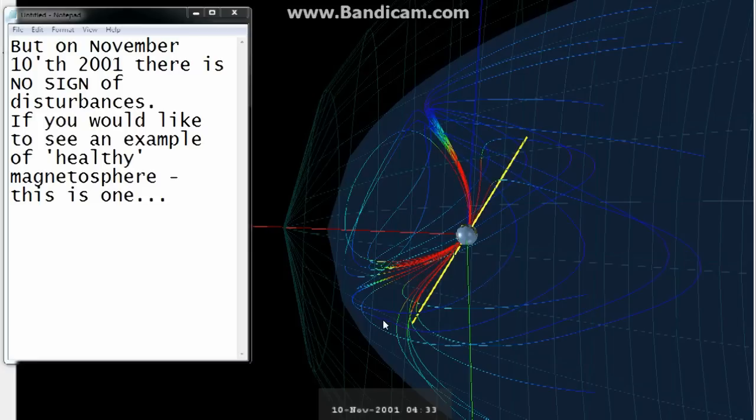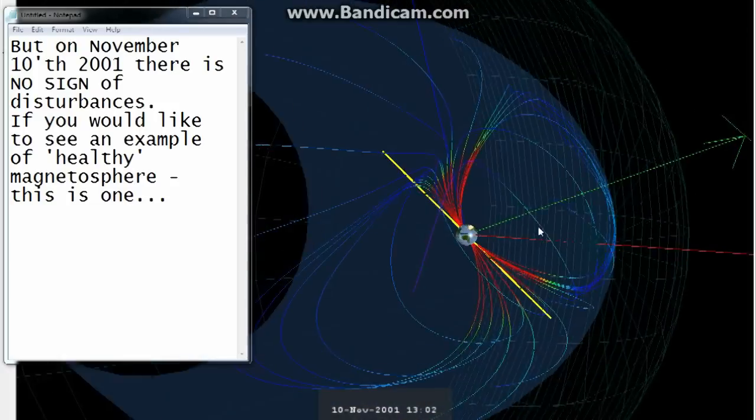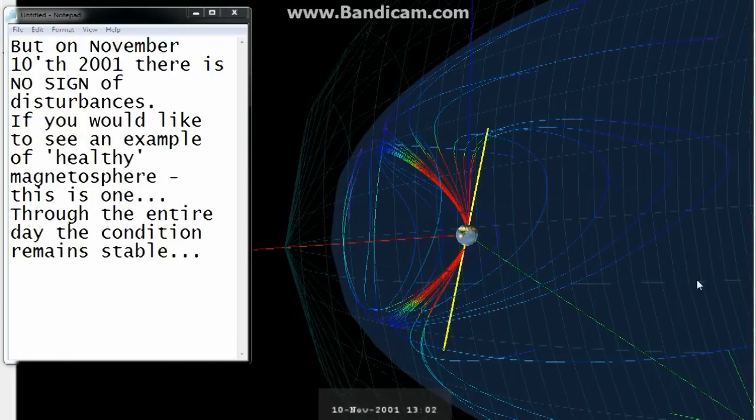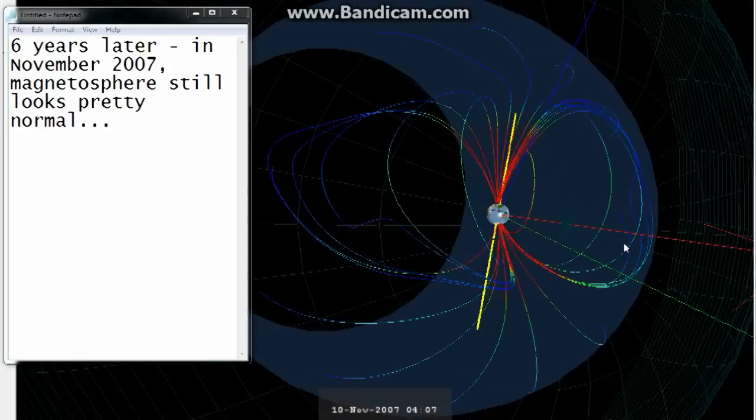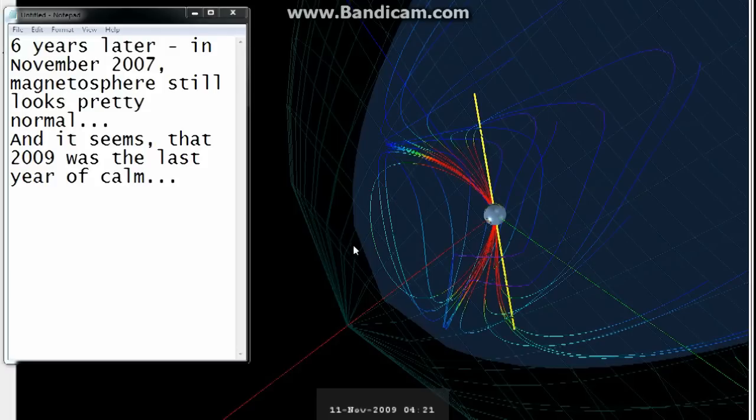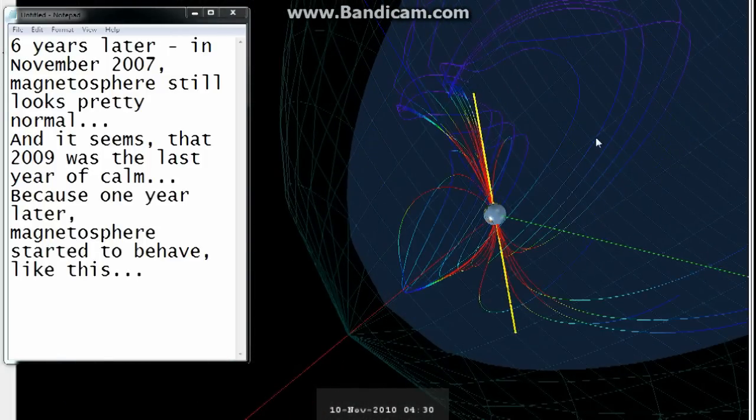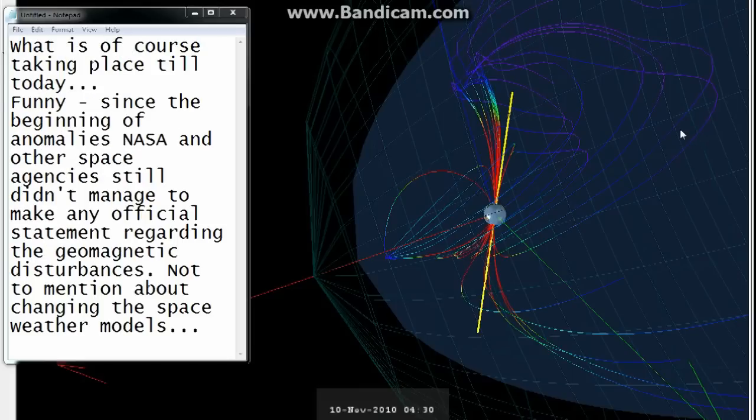If you would like to see an example of a healthy magnetosphere, this is one. For the entire day the condition remains stable. Six years later in November 2007, the magnetosphere still looks pretty normal. And it seems that 2009 was the last year of calm, because one year later the magnetosphere started to behave like this, which is of course taking place till today.